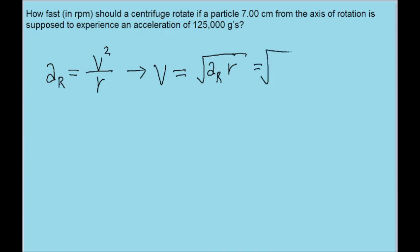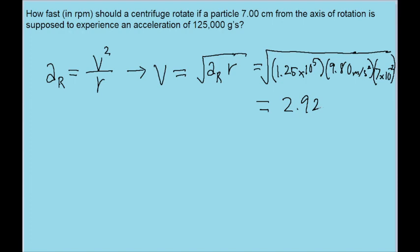Now given the angular acceleration, it's given to us as 125,000 g's. So we can simply take this number and multiply it by 9.8 meters per second squared to get the actual centripetal acceleration. So we'd write this as 1.25 times 10 to the power of 5 and multiply that by 9.8 meters per second squared. And then we'd also multiply it by the radius, which is given as 7 centimeters, but we'll want to multiply it by 10 to the power of negative 2 to convert it into meters. And that gives us a speed of about 2.928 times 10 to the power of 2 meters per second.